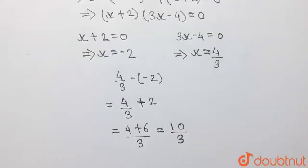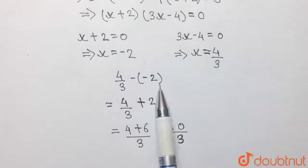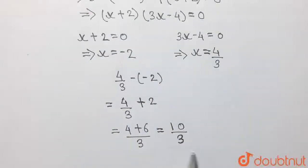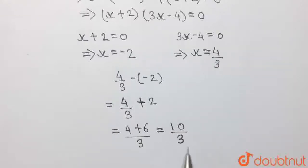So we can conclude that the value of the smaller solution subtracted from the value of the larger solution is equal to 10 by 3. Hence 10 by 3 is the correct answer.